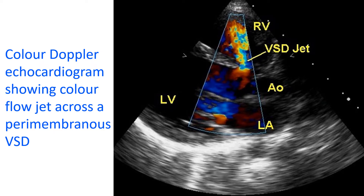In small VSD, it is often a loud murmur due to the turbulent flow across the defect. The murmur is softer in large VSD because the pressure gradient between the two ventricles will be low. Presence of the large defect equalizes the pressures in the two chambers. It is a systolic murmur, meaning that it is heard when the heart contracts.